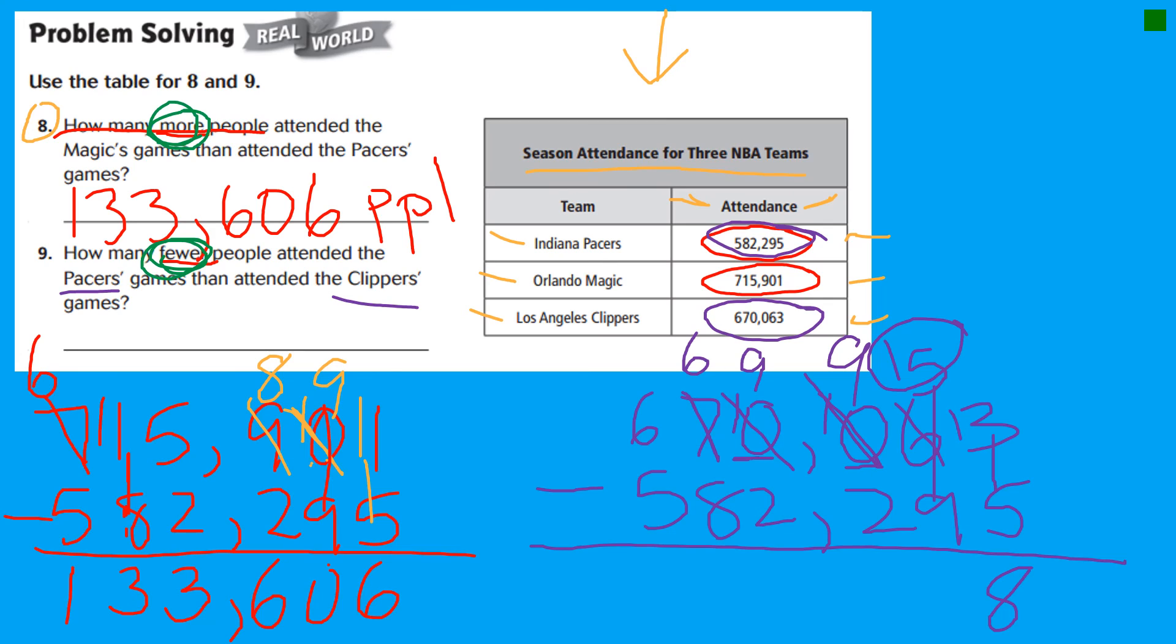Now, fifteen minus nine. I'm going to start at nine in my head and count up to fifteen. Nine, ten, eleven, twelve, thirteen, fourteen, fifteen. That is six. Another way I do that is I know that fifteen is five away from ten. So if I'm getting to nine, that's one more. And that's six.